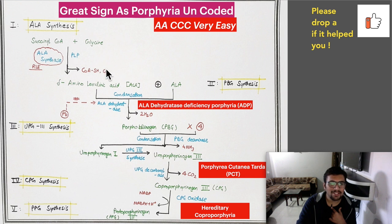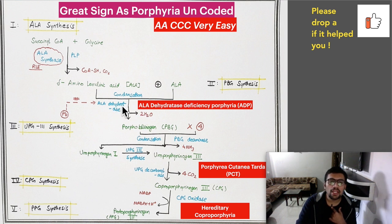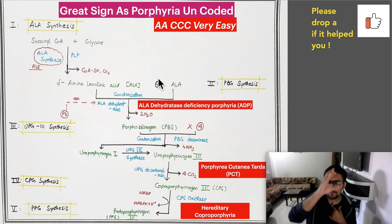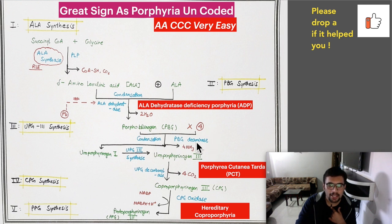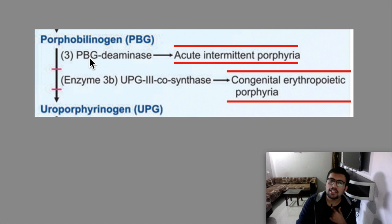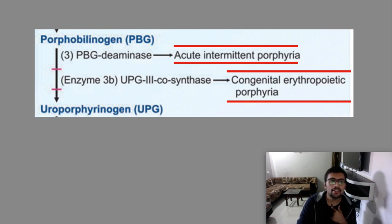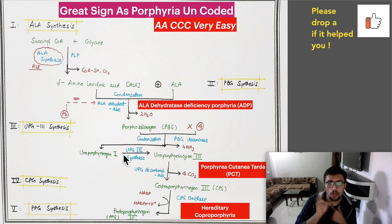In the first step, there is ALA dehydratase — same enzyme deficiency gives ALA dehydratase porphyria (ADP); that is our first A, very easy. Then we have the pathway from porphobilinogen to uroporphyrinogen conversion — two reactions occur here. If there is a defect in the first enzyme, PBG deaminase, it is acute intermittent porphyria — our second A. Then if there is deficiency in the next enzyme (uroporphyrinogen III cosynthase), it is congenital erythropoietic porphyria — our first C.